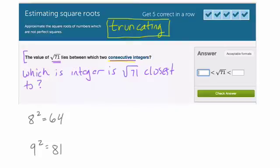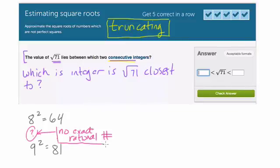It's a really fun activity to try and find where exactly it is, because guess what? You won't find an exact location. In fact, there is no exact rational number that's squared that will give you exactly the square root of 71. This is at the heart of the idea of irrational numbers. But we can tell it's between 8 and 9, for sure.